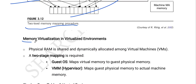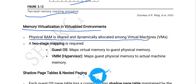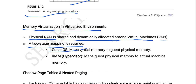In a virtualized environment, physical RAM is shared and dynamically allocated among virtual machines. A two-stage mapping is required: the guest OS maps virtual memory to guest physical memory, and the VMM/hypervisor maps the guest physical memory to actual machine memory.